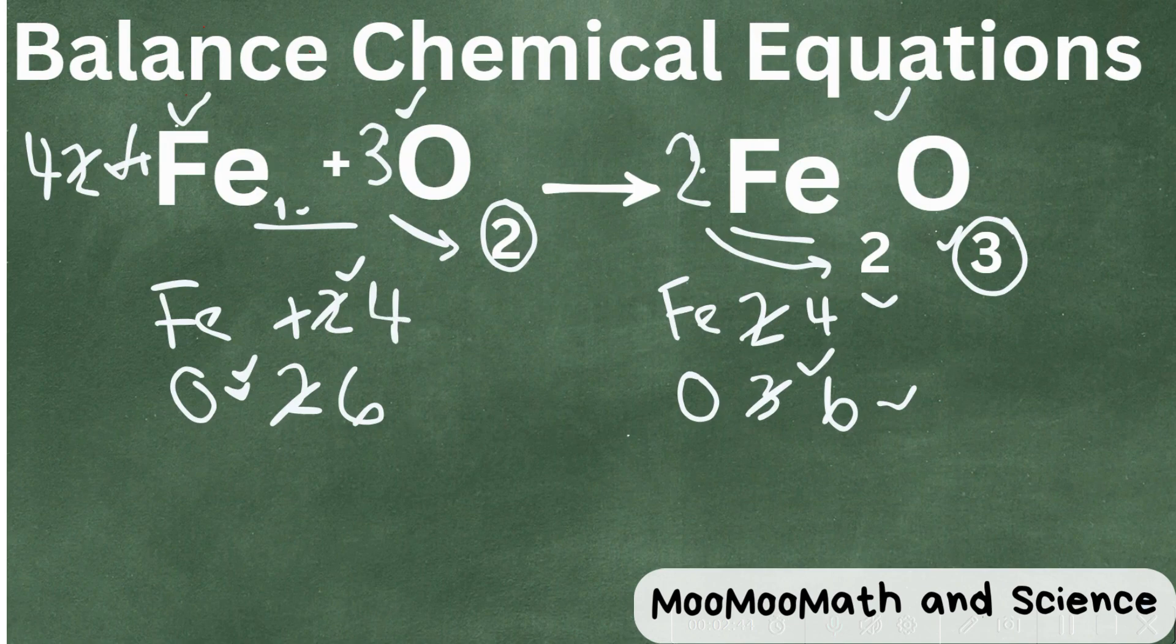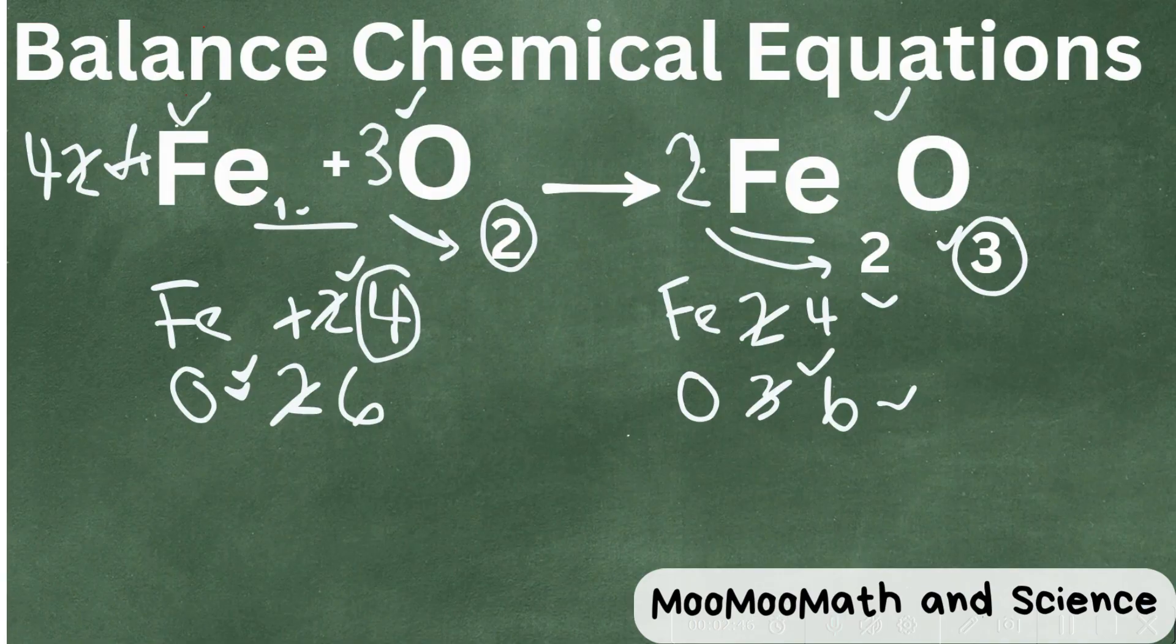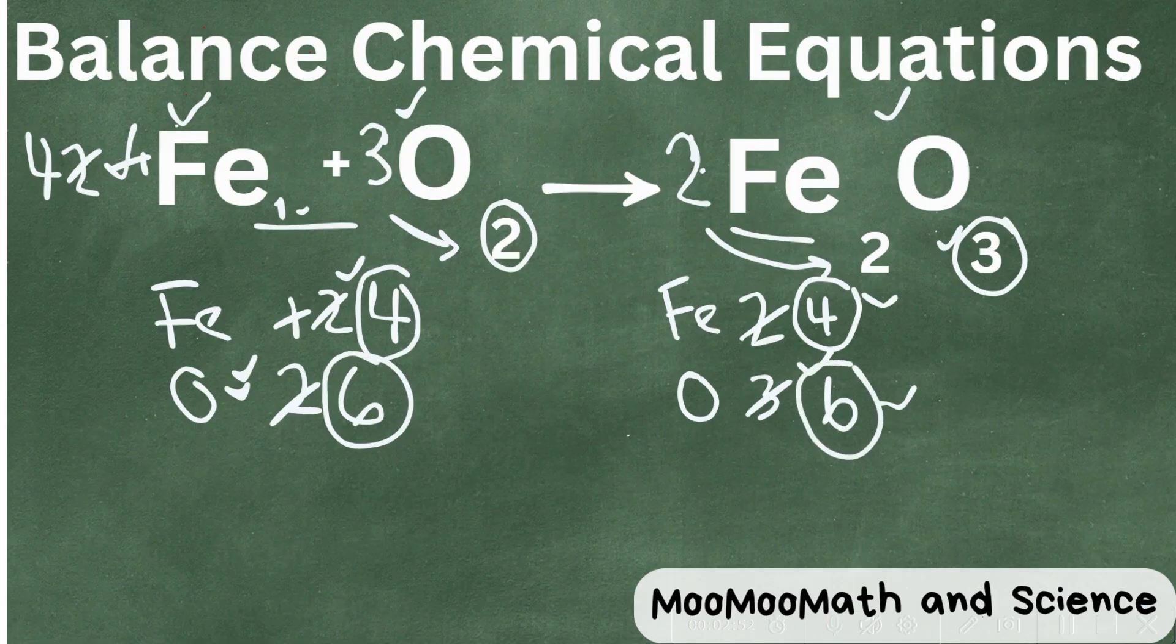Look, we are in balance. We have a 4, a 4 for iron, 6 and 6 for oxygen. So now let's just rewrite it.